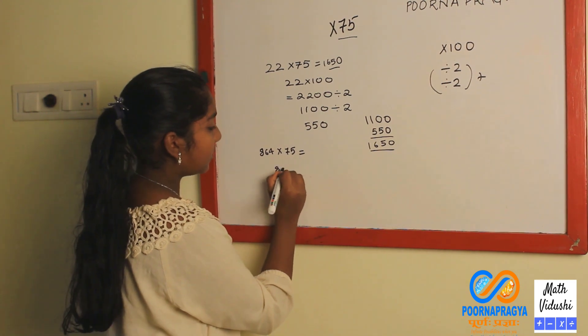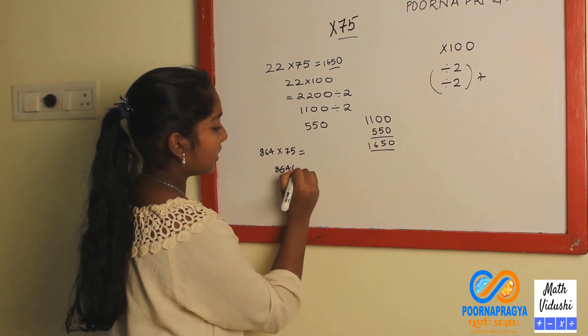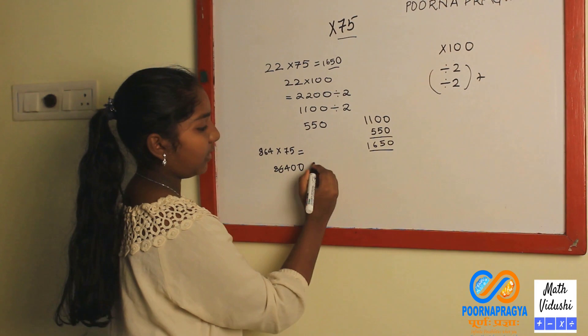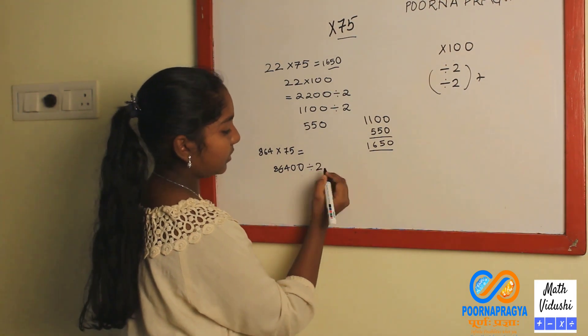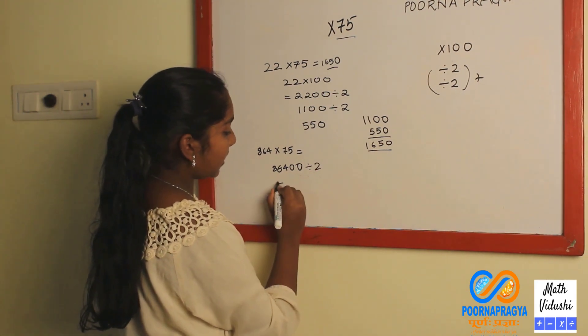You will multiply it with 100 and you will get 86400 and divide the number by 2. You will get 43200.